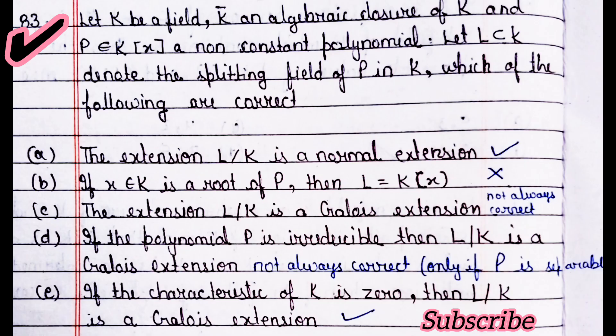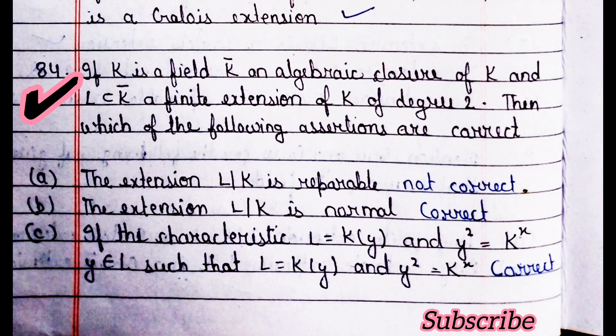If the characteristic of K is zero, then L/K is a Galois extension — this is a correct statement. Last question: if K is a field, K-bar an algebraic closure of K, and L is a finite extension of K of degree 2, then which assertions are true? Option A is not correct, option B is correct, and option C is also correct.